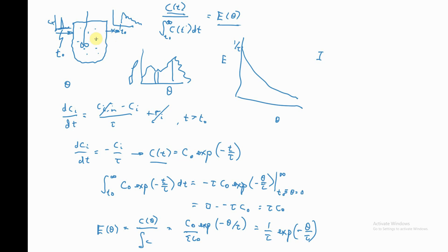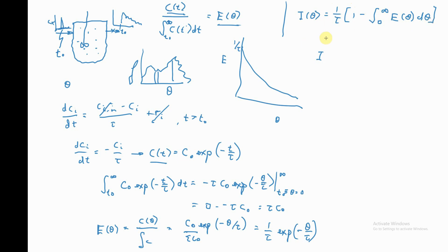For the CSTR, let's look up the relationship between E and I. Recall: I(θ) = (1/τ)·[1 − integral from 0 to θ of E(θ')·dθ']. This expression was derived in the first lecture without prescribing any type of mixing, so this relationship is general — it holds for any type of reactor. Let's use that to discover I(θ) for the CSTR specifically.